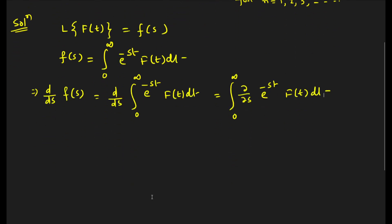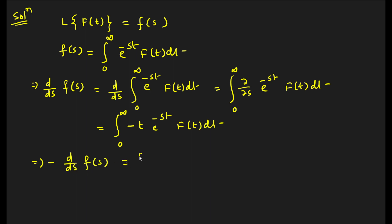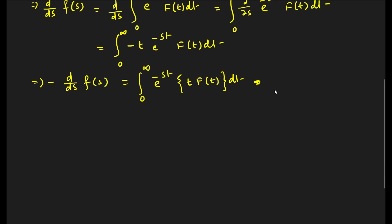Since we are differentiating with respect to s, t will be treated as a constant. So the integral from 0 to infinity of (-t) e^(-st) f(t) dt. Taking the minus sign to the left-hand side gives us: -d/ds F(s) equals the integral from 0 to infinity of e^(-st) · t·f(t) dt. And this is nothing but the Laplace transformation of t·f(t).